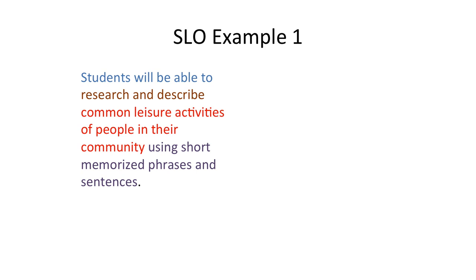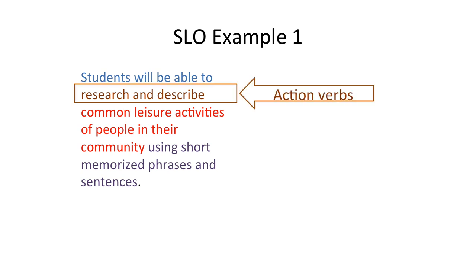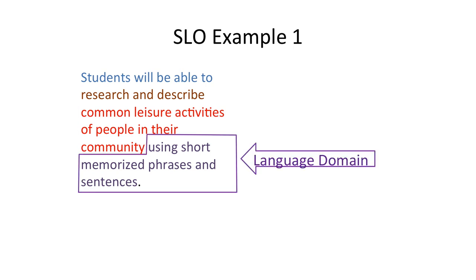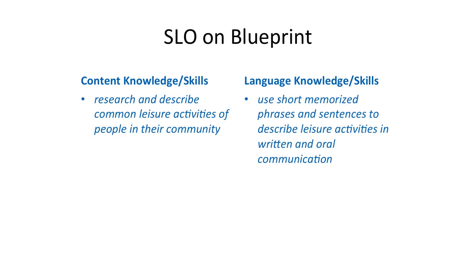Let me give you an example. You can see it starts with 'students will be able to,' followed by the action verbs research and describe. The content domain is 'common leisure activities of people in their community,' and the language domain is 'using short memorized phrases and sentences.' If we put this SLO on our project blueprint, under content knowledge it would say 'research and describe common leisure activities,' and under language knowledge and skills it would say 'use short memorized phrases and sentences to describe leisure activities in written and oral communication form.'